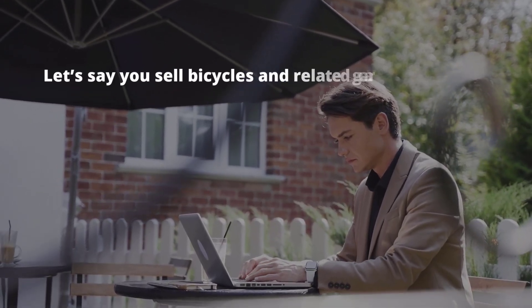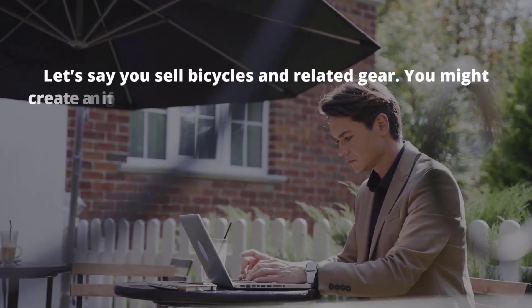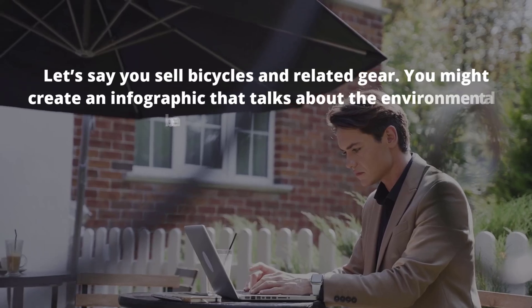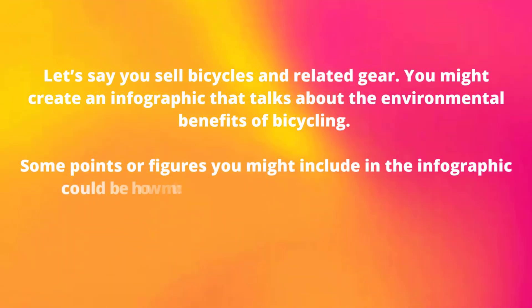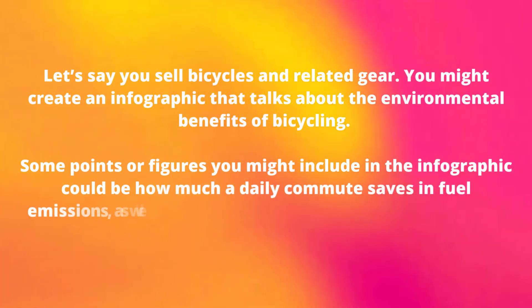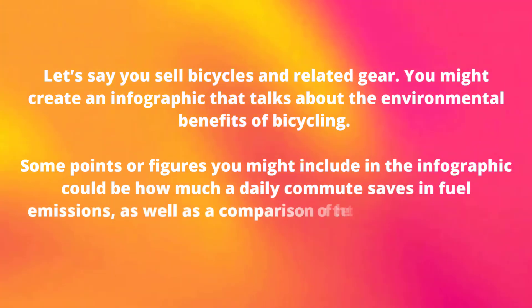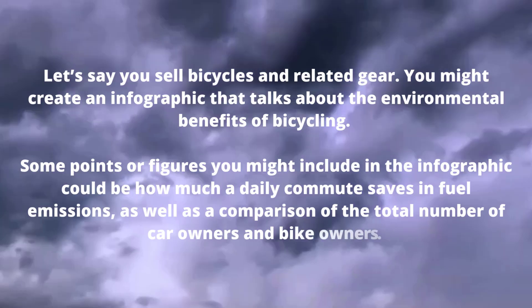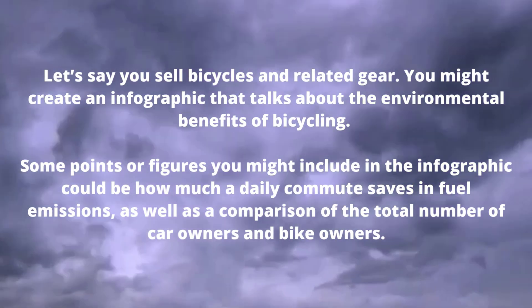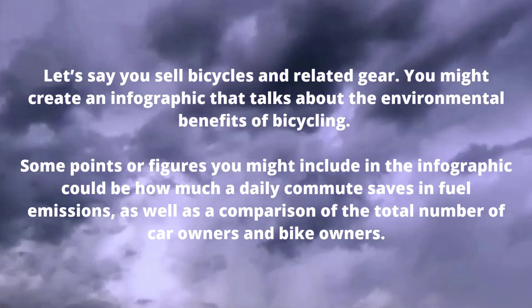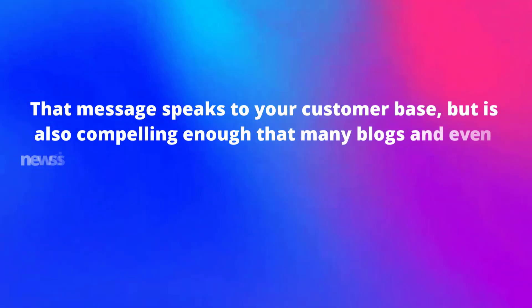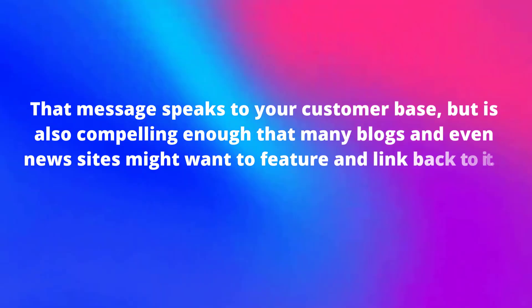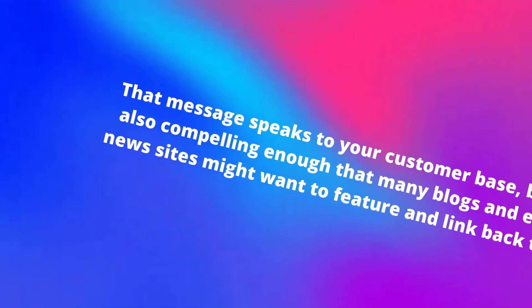For example, if you sell bicycles and related gear, you might create an infographic about the environmental benefits of bicycling — such as how much a daily commute saves in fuel emissions, and a comparison of the total number of car owners and bike owners. That message speaks to your customer base, but it's also compelling enough that many blogs and even news sites might want to feature and link back to it.